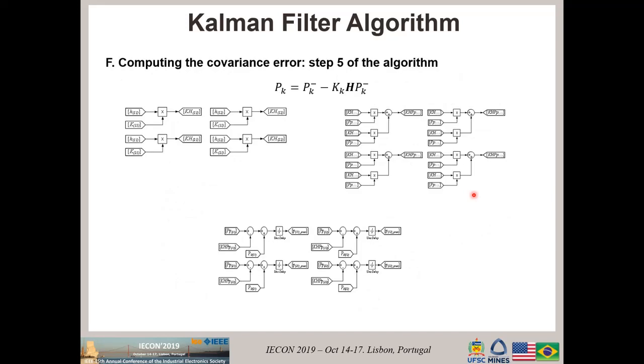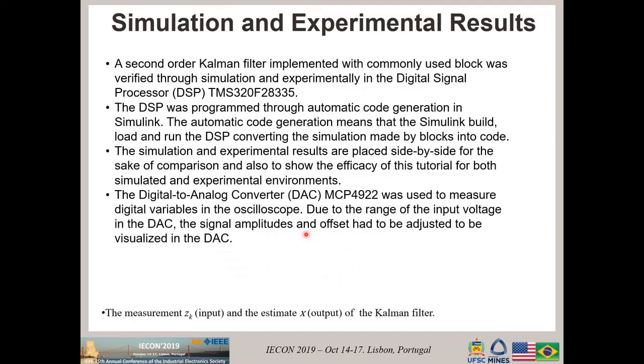Finally, you can compute the covariance error, which is step five of the algorithm, using this set of blocks. We also have unit delay blocks, which are necessary to make computation of the covariance error. Remember that the objective of the Kalman filter is to make zero the covariance error. This is supposed when they are working in a steady state condition. After presenting all the equations of the Kalman filter with blocks, which makes it very simple for understanding, we made some simulation and experimental results.